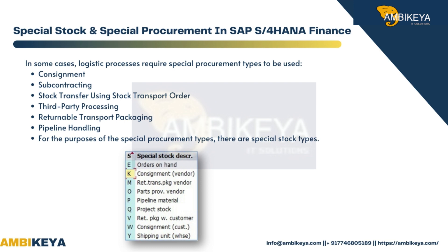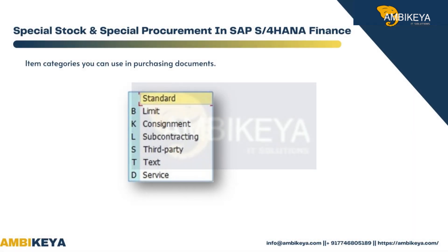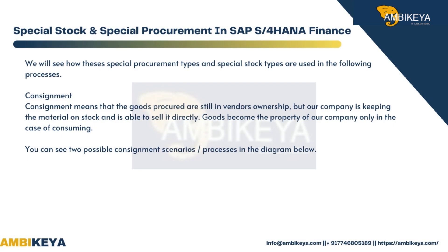Returnable transport packaging and pipeline handling are also covered. For the purposes of the special procurement types, there are special stock types and item categories you can use in purchasing documents. We will see how these special procurement types and special stock types are used in the following processes.